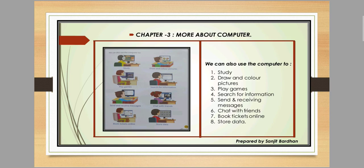We can chat with our friends. We are also able to book tickets online, like air tickets or train tickets. Next is store data — we can easily store information like any document, any picture, or any video on a computer.